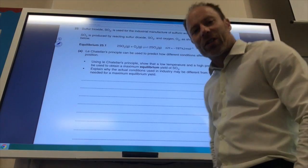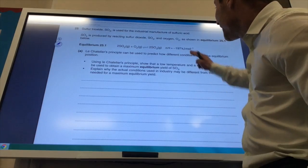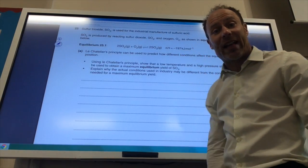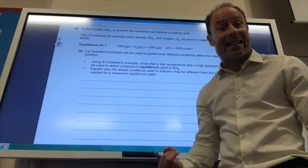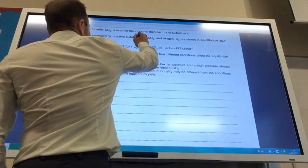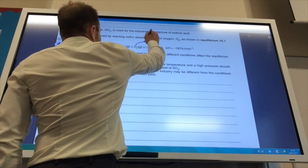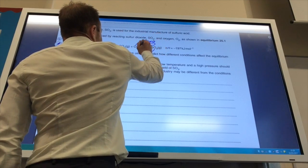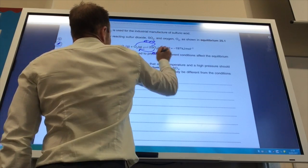So let's do that first. The first thing to notice is this is an exothermic reaction. It's a minus, a negative number. So it's exothermic. So the forward reaction is exothermic, and that means the backward reaction is endothermic.